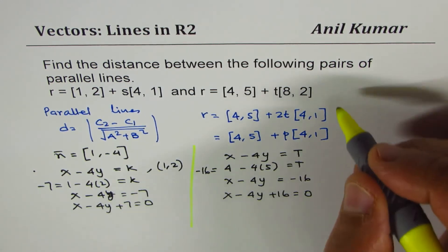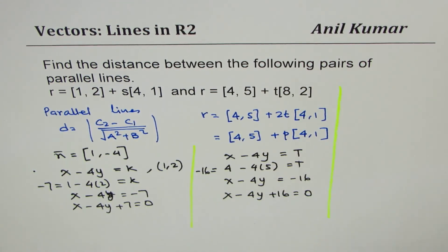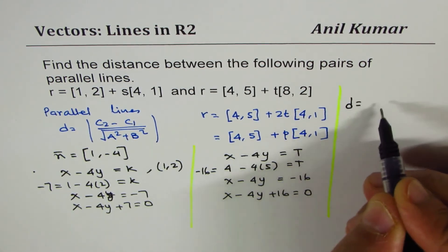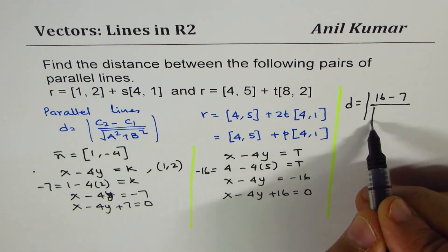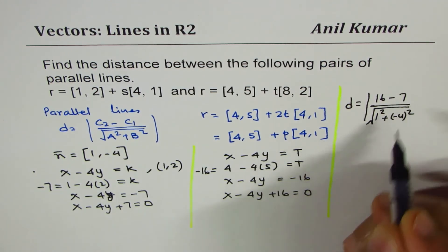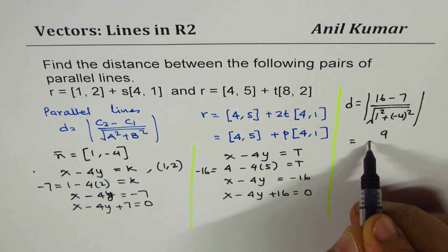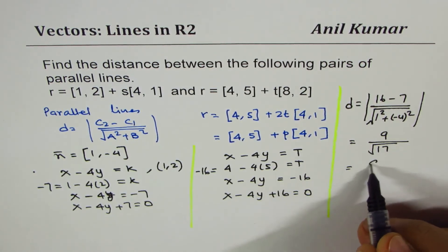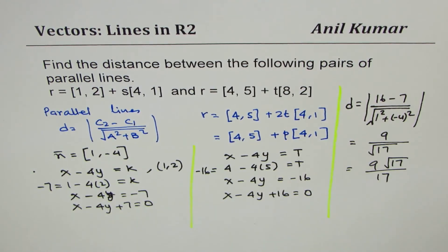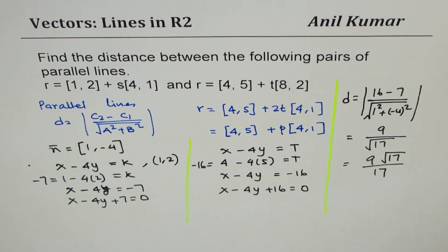Applying the distance formula: d = |16 - 7| / √(1² + (-4)²) = 9 / √17. Rationalizing, this becomes 9√17/17. That is the distance between these two lines. I hope it's clear how to find the distance between parallel lines in ℝ² whether the lines are given in scalar or vector form. Feel free to make suggestions, share the videos, and thank you — all the best!